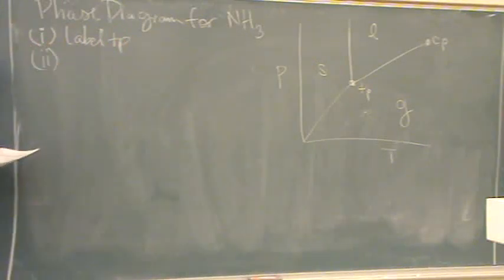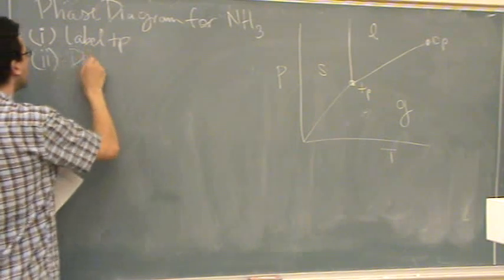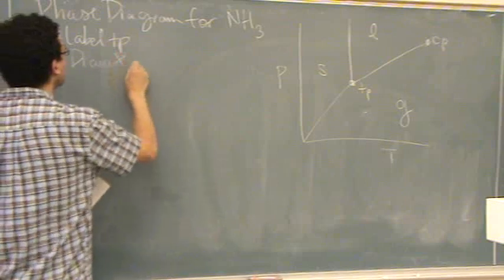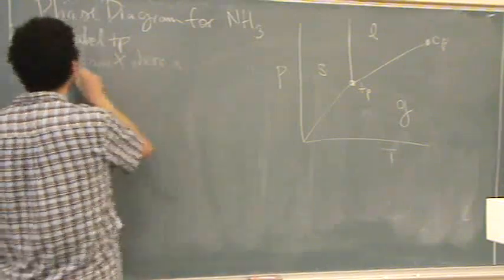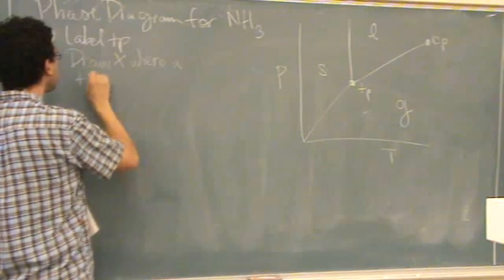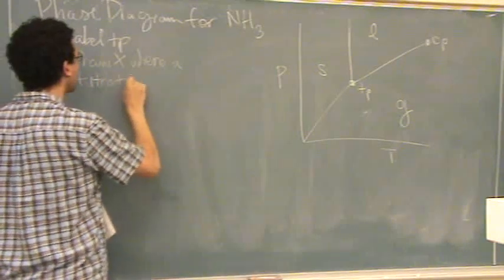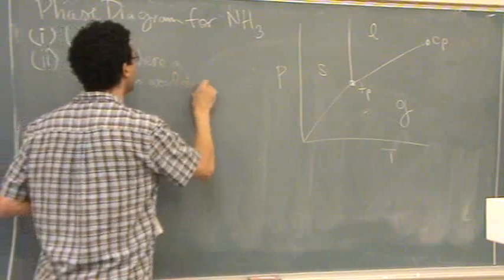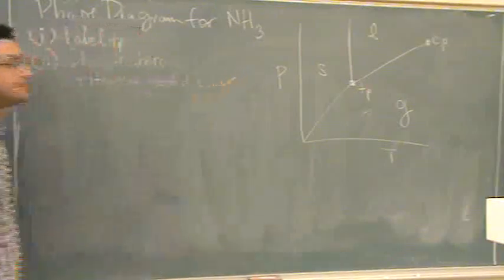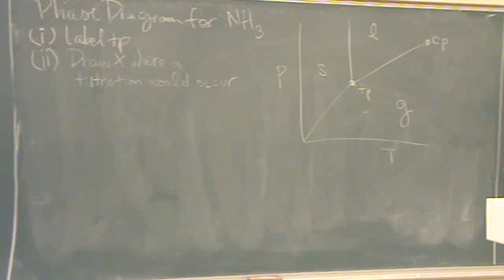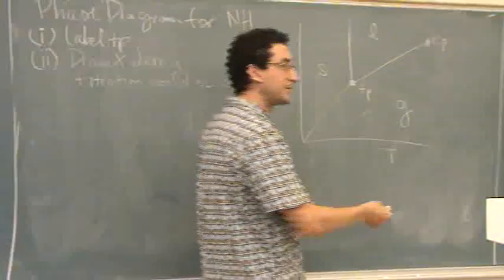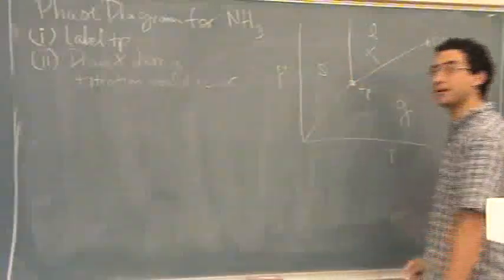Fantastic. Part II, or double I, draw an X where a titration would occur. So you want to put an X if you're doing the titration with ammonia. Where would that occur? What do you think? Happens in the liquid state. Somewhere up there you better have an X.